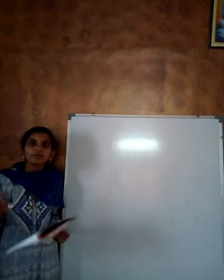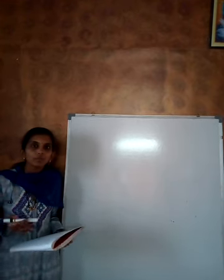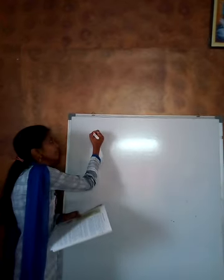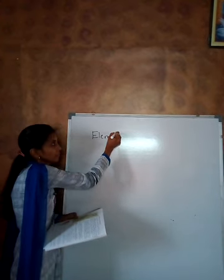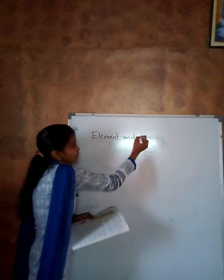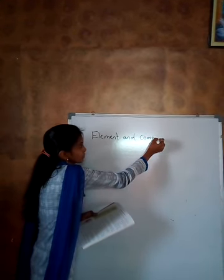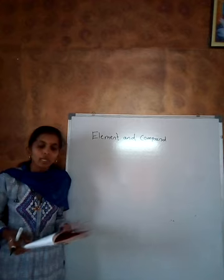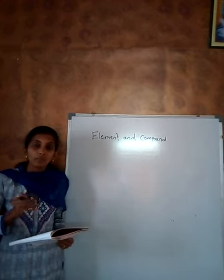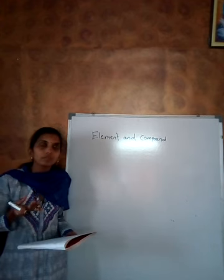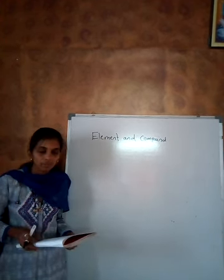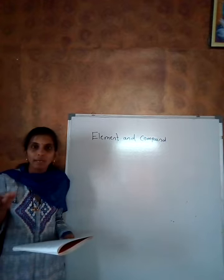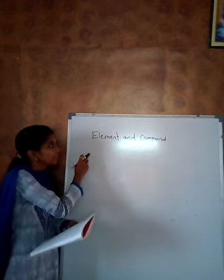Matter is made up of elements. Element and compound is a most important point. Every solid, liquid and gas is made up of a number of simple unit substances. These building blocks are called elements. Matter is made up of a number of substances called elements.